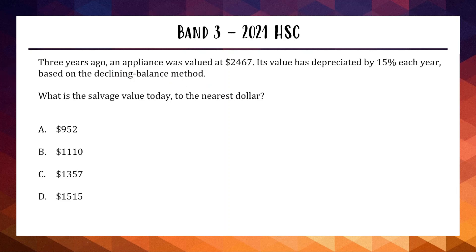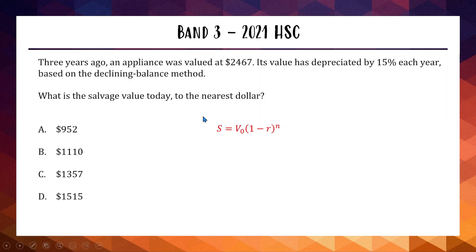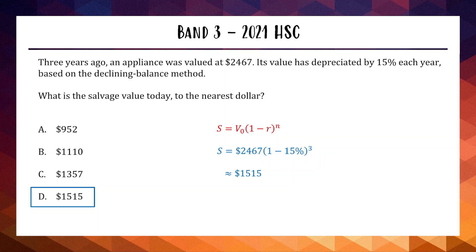The formula is on your reference sheet. The question asks for the salvage value — what is the value of the appliance after three years? Using the declining balance formula: S = V₀(1 − r)ⁿ, where S is salvage value, V₀ is the initial value, r is the depreciation rate, and n is the time period. Substituting in: V₀ = 2467, r = 0.15, n = 3. This gives us approximately $1,515 — option D. It's essentially a free mark if you know how to read the formula sheet.